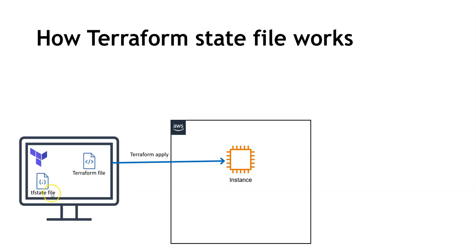The Terraform state file is a JSON file that contains information related to your current infrastructure provisioned by Terraform. Whatever is provisioned by Terraform and already present in your AWS account gets recorded in this state file. It's created the first time you run terraform apply, and subsequently gets updated. By default, this state file is created in your local system.